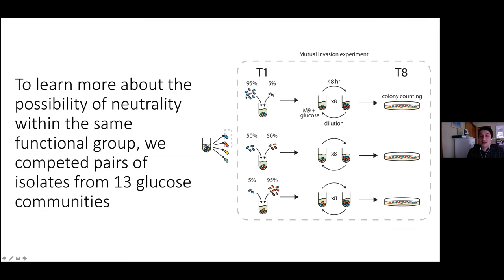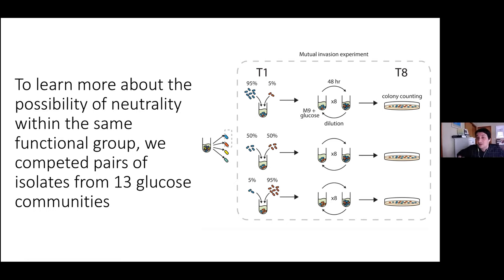Chang isolated bacteria from 13 communities — he wasn't able to isolate all of them, since a small fraction couldn't grow on their own and required partners, but he isolated about 90 percent of all taxa on average. He then mixed isolated pairs at different initial frequencies and propagated them in the same ecological regime — M9 plus glucose with 48-hour growth periods — for multiple transfers, assembling communities from the bottom up to see if he could recapitulate the top-down behavior.